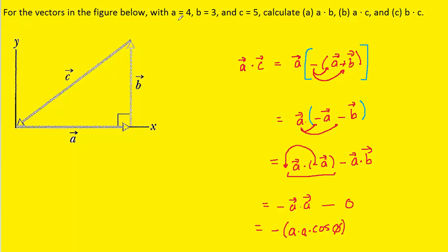Obviously vector A and another vector A would have an angle of zero degrees between them. So we're going to enter zero in for the angle and then little a was given to us in the question as being 4. So we'll plug that in.